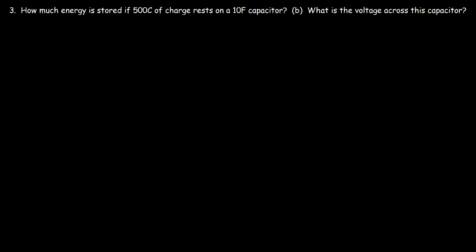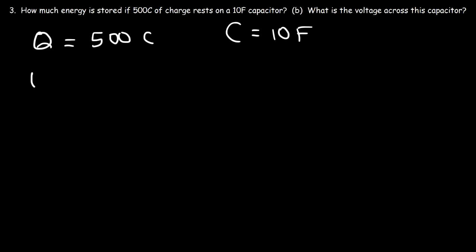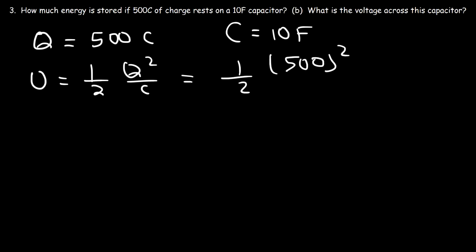Number three: how much energy is stored if 500 coulombs of charge rests on a 10 farad capacitor? We have the charge Q equal to 500 coulombs and the capacitance of 10 farads. The potential energy is one-half times Q squared divided by C. So it's one-half of 500 squared divided by 10. 500 squared is 250,000, divided by 10 is 25,000, divided by 2 gives 12,500 joules.